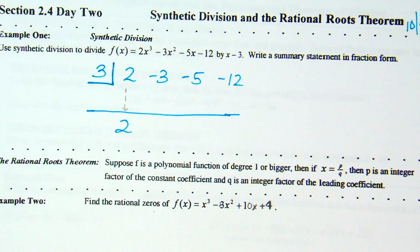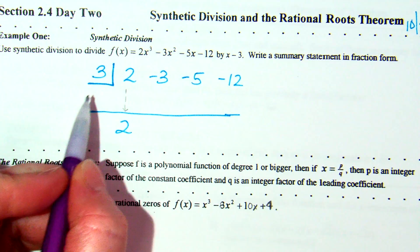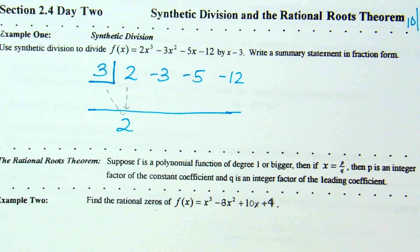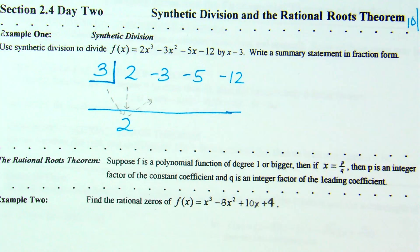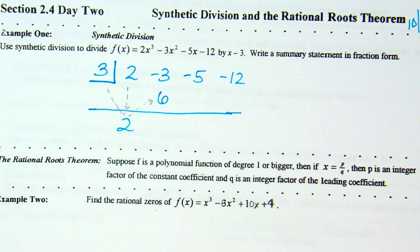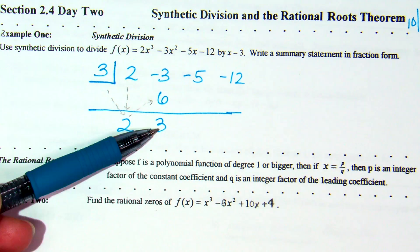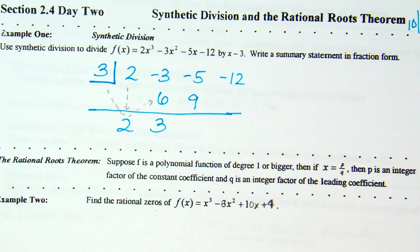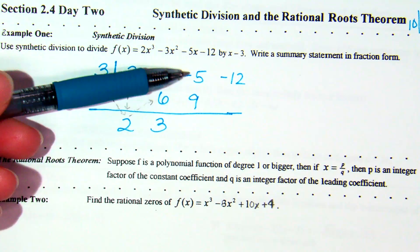This is a series of multiplying and adding: multiply, add, multiply, add, multiply, add. When we multiply, we're always multiplying by the number in the box — so 3 — times whatever your last number is below the line. It bounces up and goes in my next empty spot. 3 times 2 is 6. Then add: negative 3 plus 6 is 3. Now multiply again: 3 times 3 is 9. That goes under my negative 5. Negative 5 plus 9 is 4.